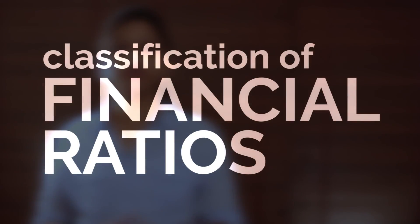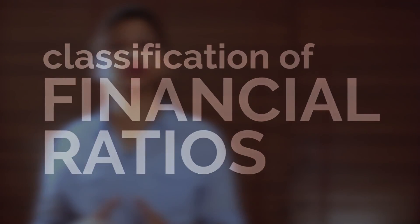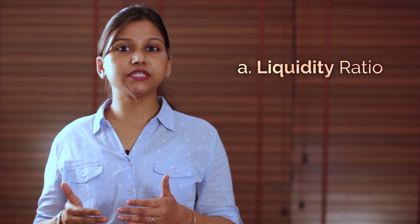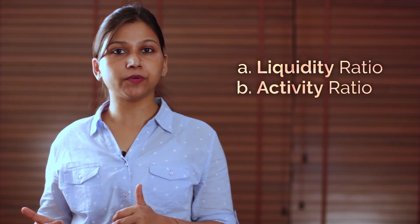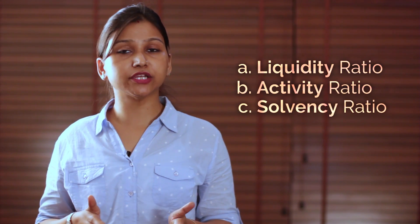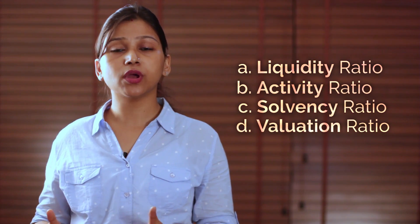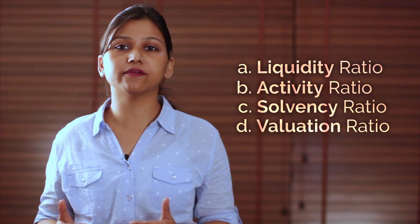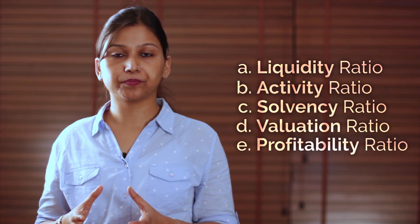Now let us understand the five major classifications of financial ratios. Financial ratios are broadly classified into five categories: liquidity ratio, activity ratio, solvency ratio, valuation ratio, and profitability ratio.